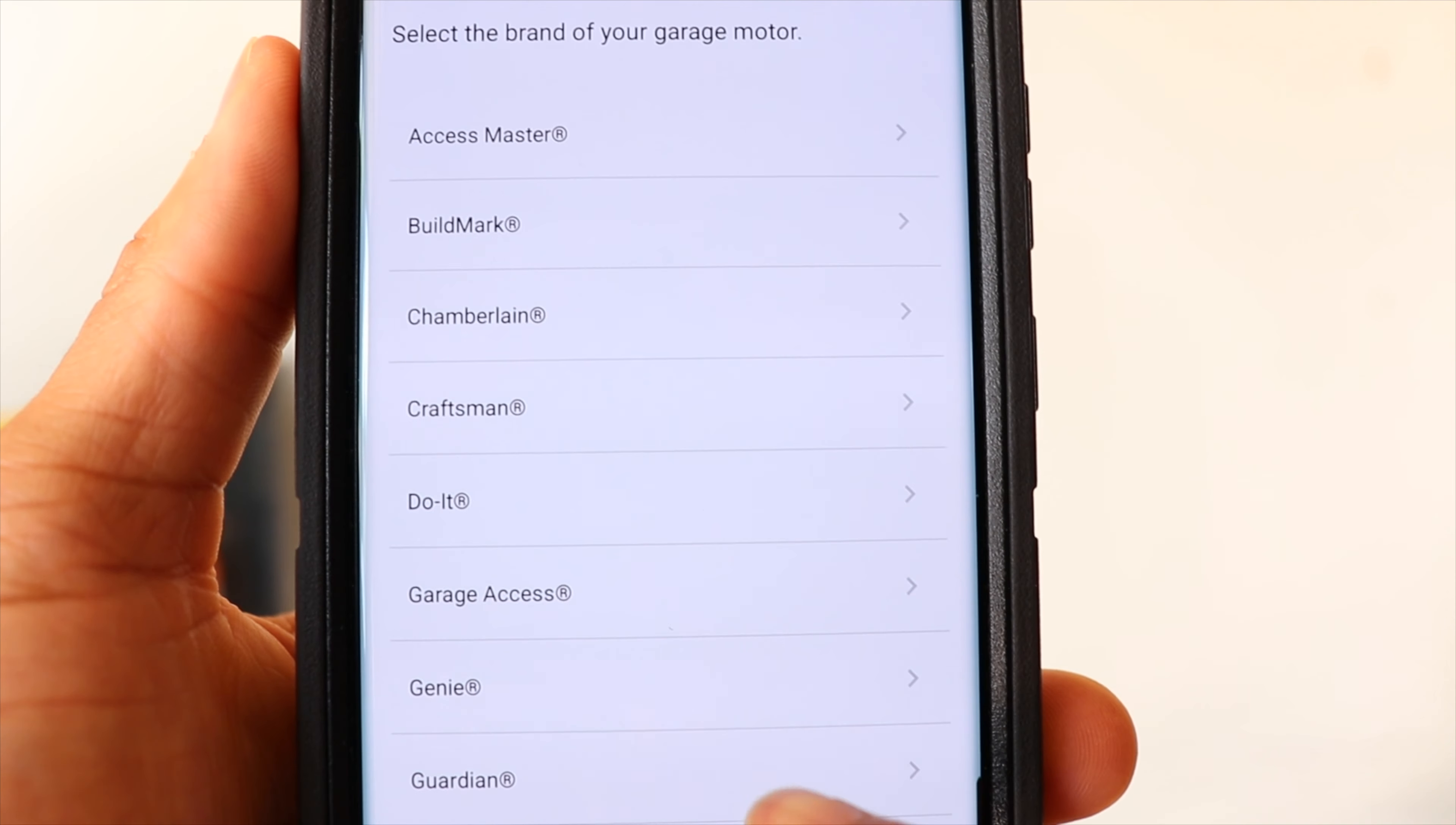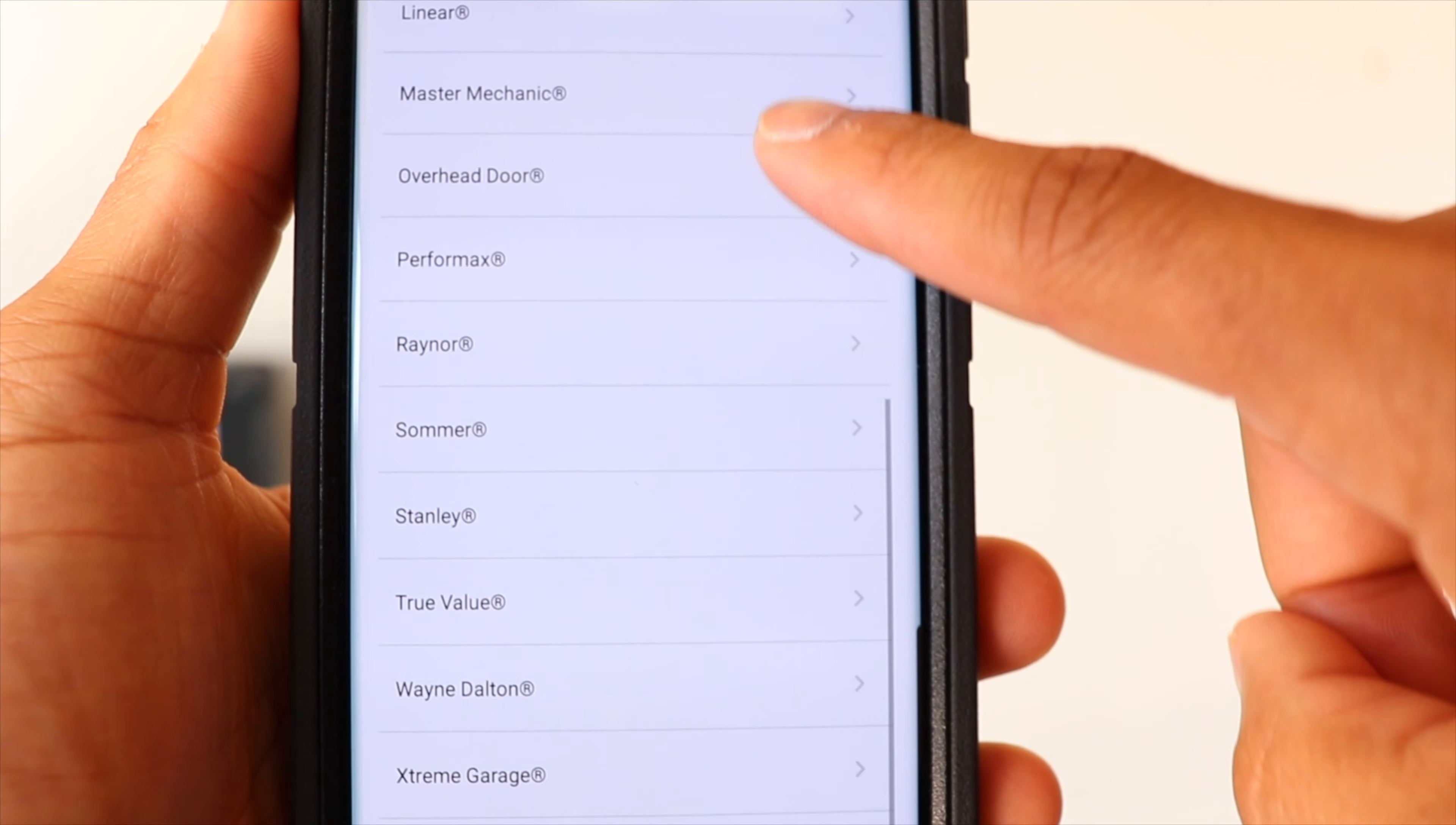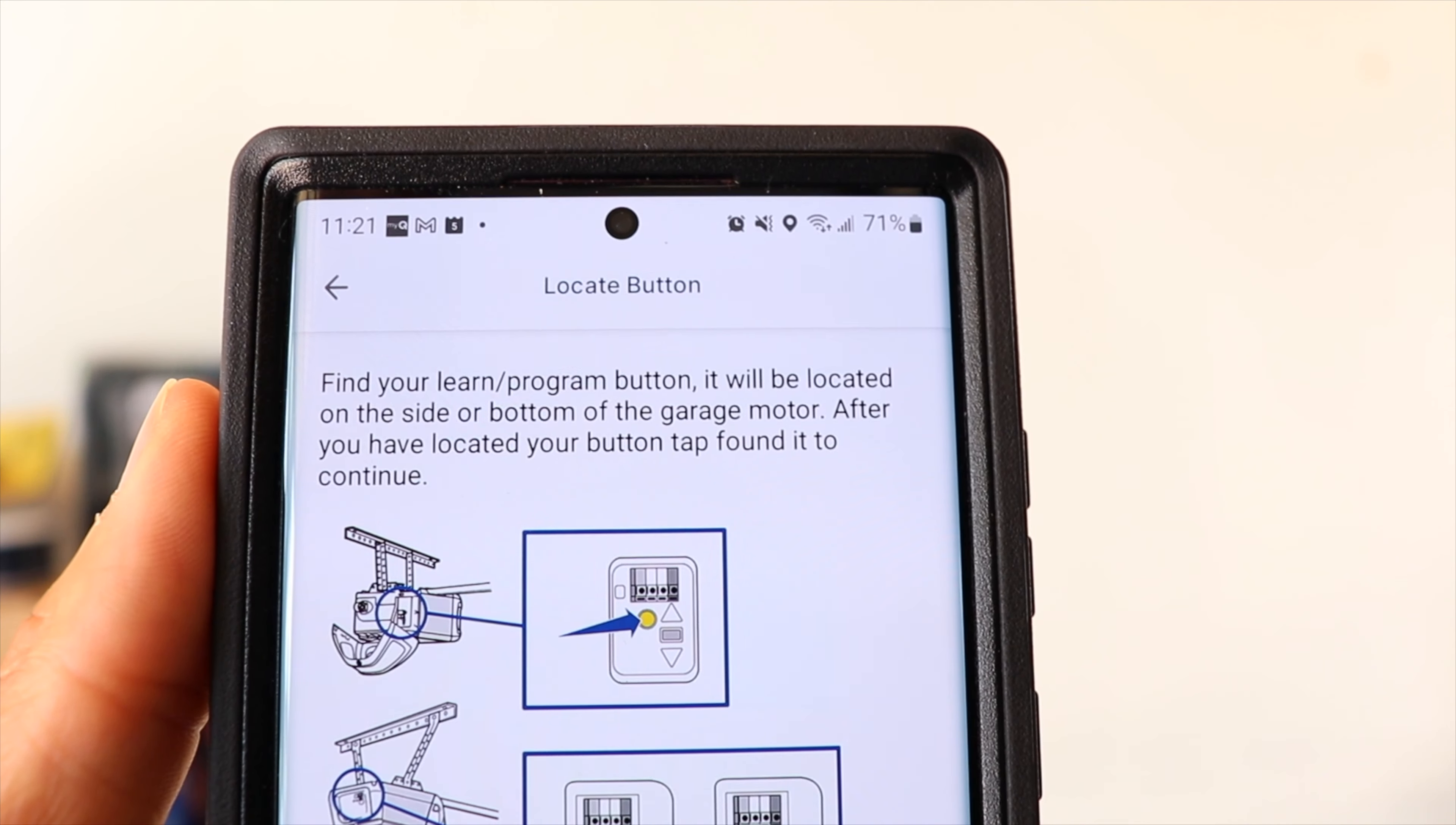It's going to have you select the brand of your garage door opener. And as you can see, it has a pretty long list. My particular garage door opener is a Chamberlain. So I'm going to go ahead and select that.